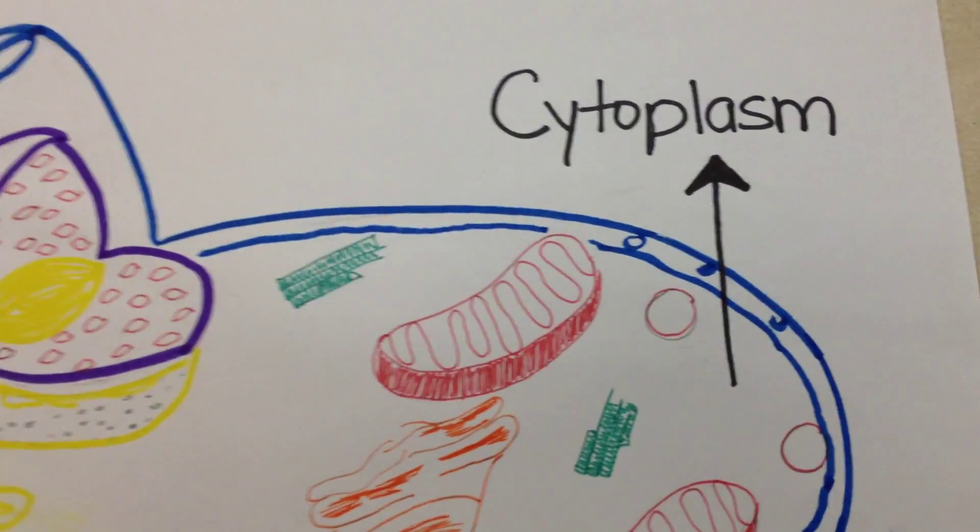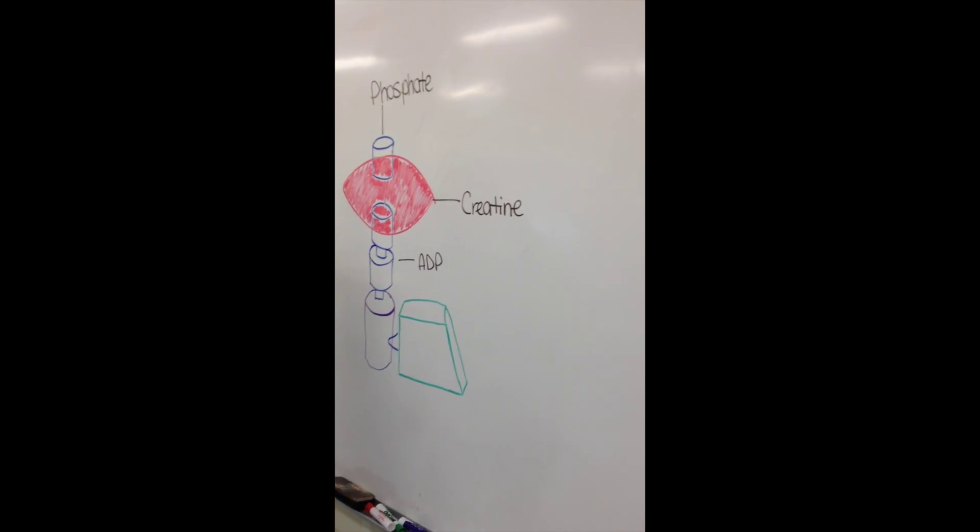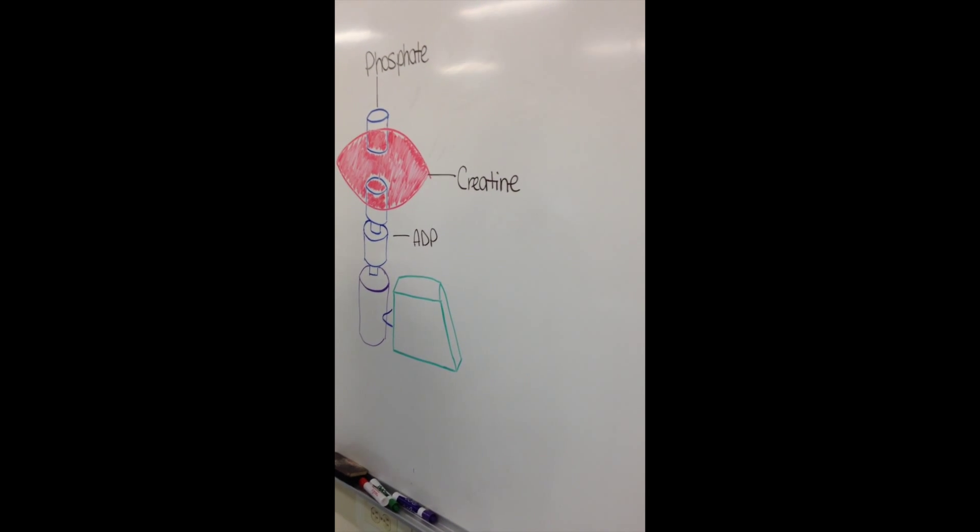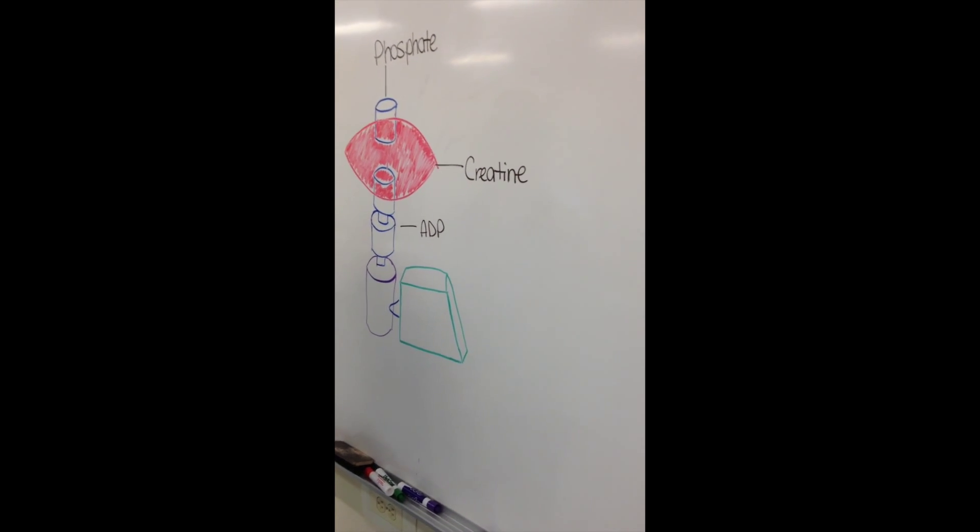ATP-PC is located in the cytoplasm. The ATP-PC system relies on the action of phosphate creatine, a compound that is normally stored in the muscle and readily accessible.